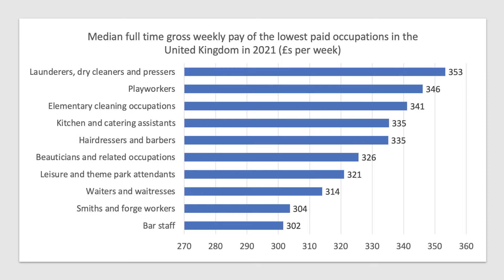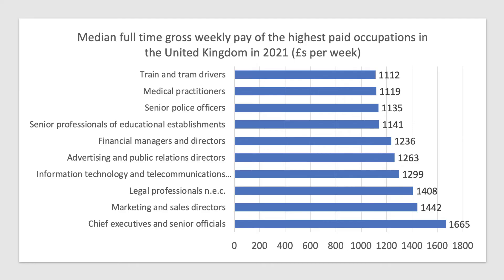Contrasting that with the highest paid occupations in the UK in 2021 — median full time earnings — chief executives have a median pay of £80,000, with many earning well more than that. Other highly paid roles include legal professionals, IT and telecommunications, senior police officers, and at the top, train and tram drivers, who are often relatively well paid — in part the result of high rates of unionisation in the industry.